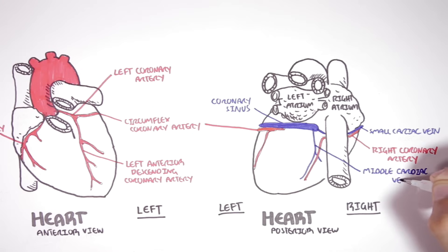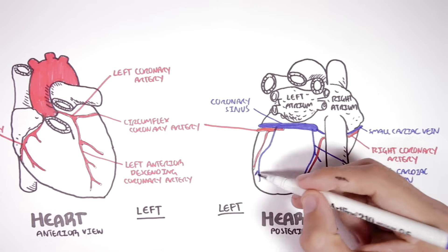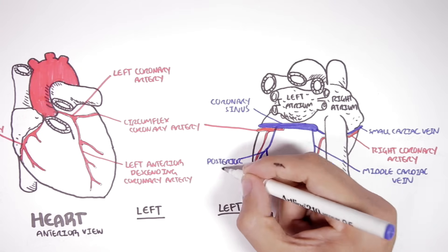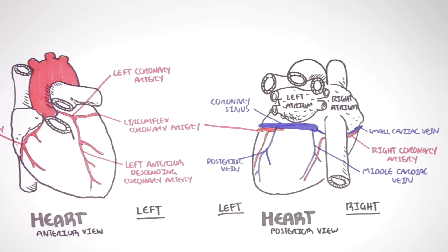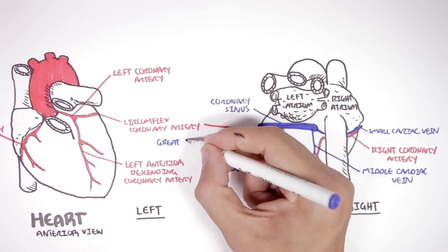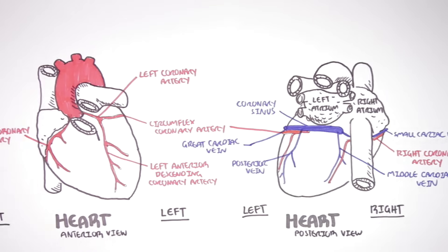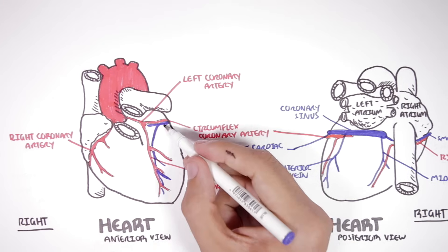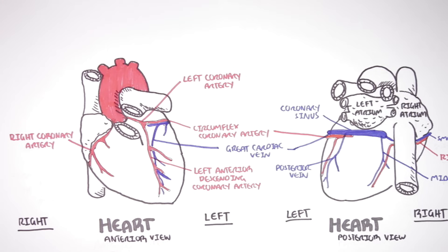The middle vein from the right ventricle here joins onto the coronary sinus. We also have the posterior vein from the left ventricle joining onto the coronary sinus, bringing back deoxygenated blood to the right atrium. Here we have the great cardiac vein, which comes from the front of the heart. And just to remember, this is the small cardiac vein here.